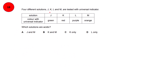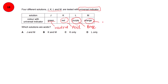Question 18: four different solutions J, K, L, and M are tested with universal indicator. You should be familiar with the colors universal indicator shows at different pH values. When the color is green, the solution is neutral. When red, the solution is acidic. Purple means it is basic. Orange is also acidic. So which solutions are acidic? K and M — option B is correct.